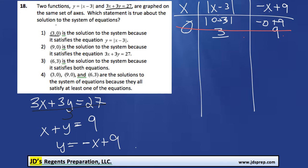The next point is 9, 0. Let's test that one out. So we're going to have an x value of 9, and then the absolute value of 9 minus 3, which is positive 6. And then for this one, it would be negative 9 plus 9, and that's 0. Again, it doesn't work.